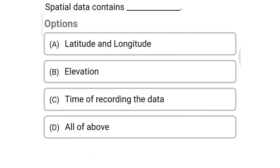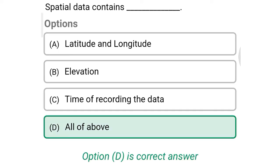Next question: Spherical data contains — Option A: latitude and longitude, Option B: elevation, Option C: time of recording the data, Option D: all of the above. So the correct answer is Option D, all of the above.